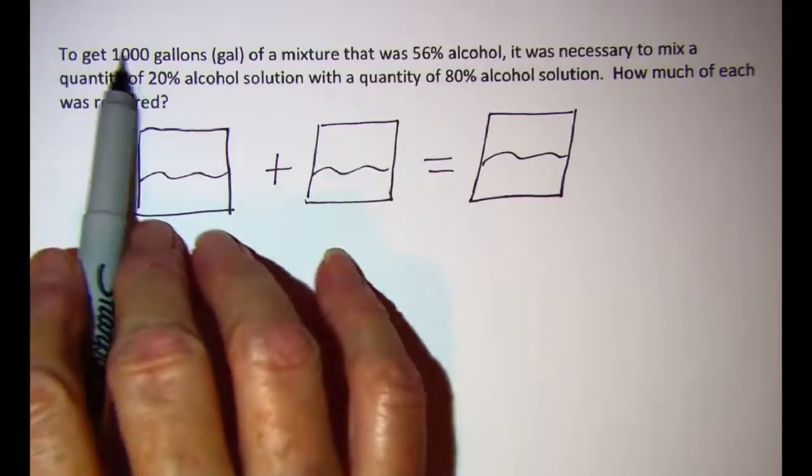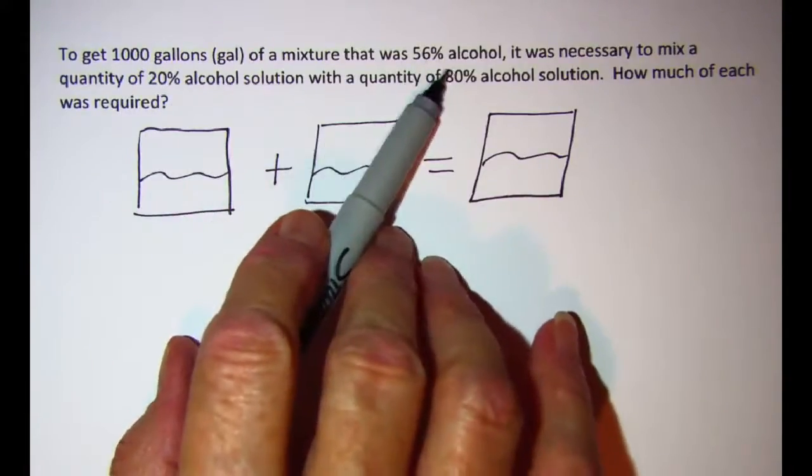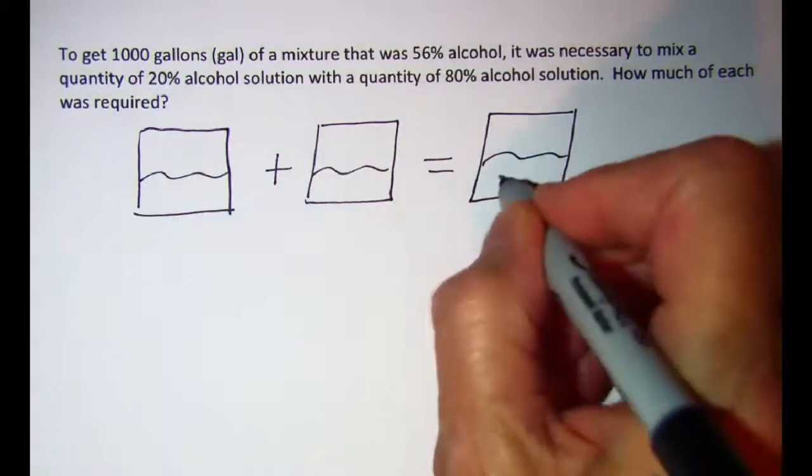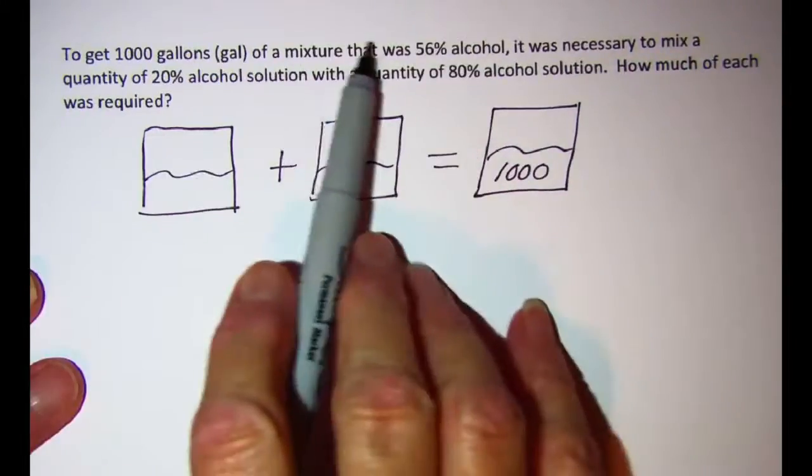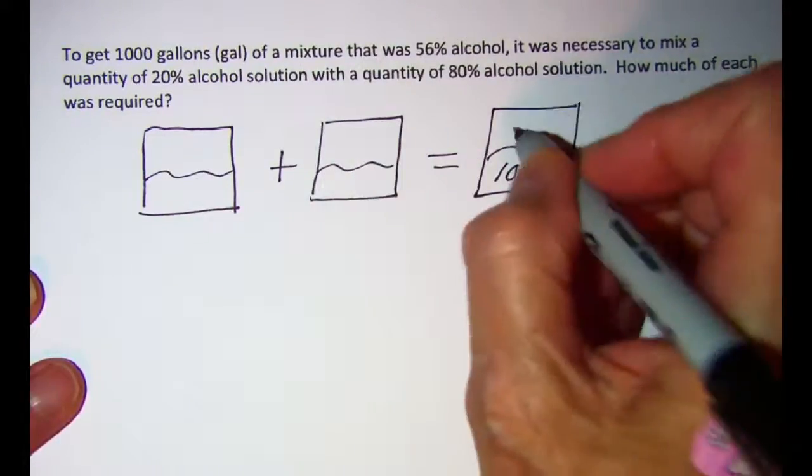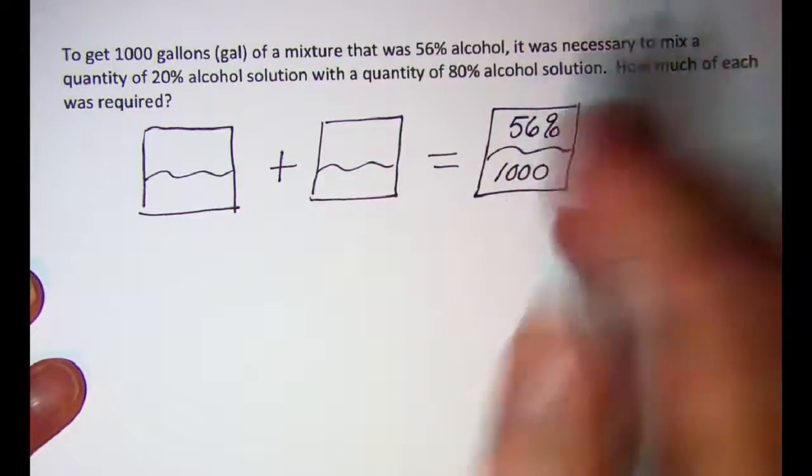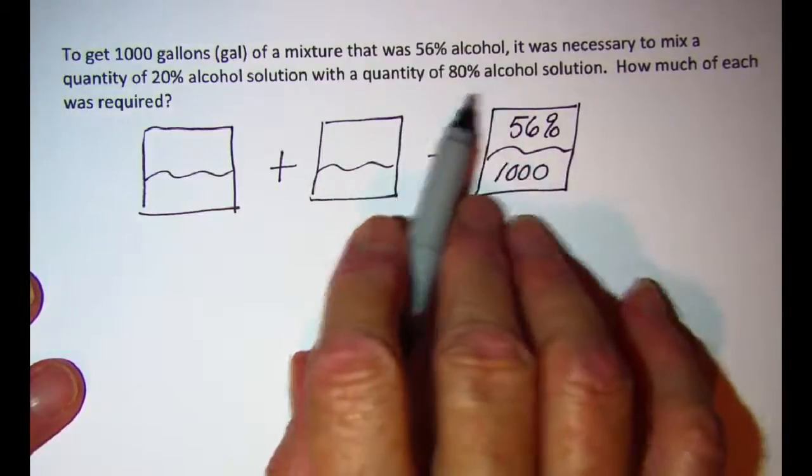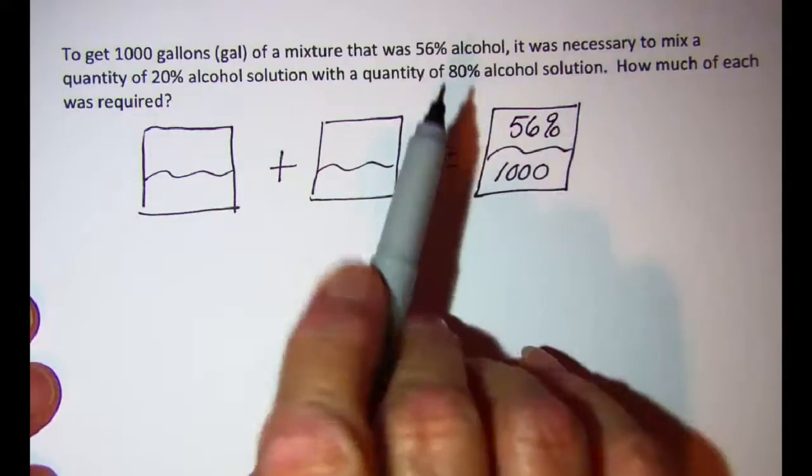So this beginning part right here is what I want to end up with. I want to get a thousand gallons and it is 56% alcohol. Now notice all of these have alcohol, so I don't have to worry about any mixing up of the types of solution.